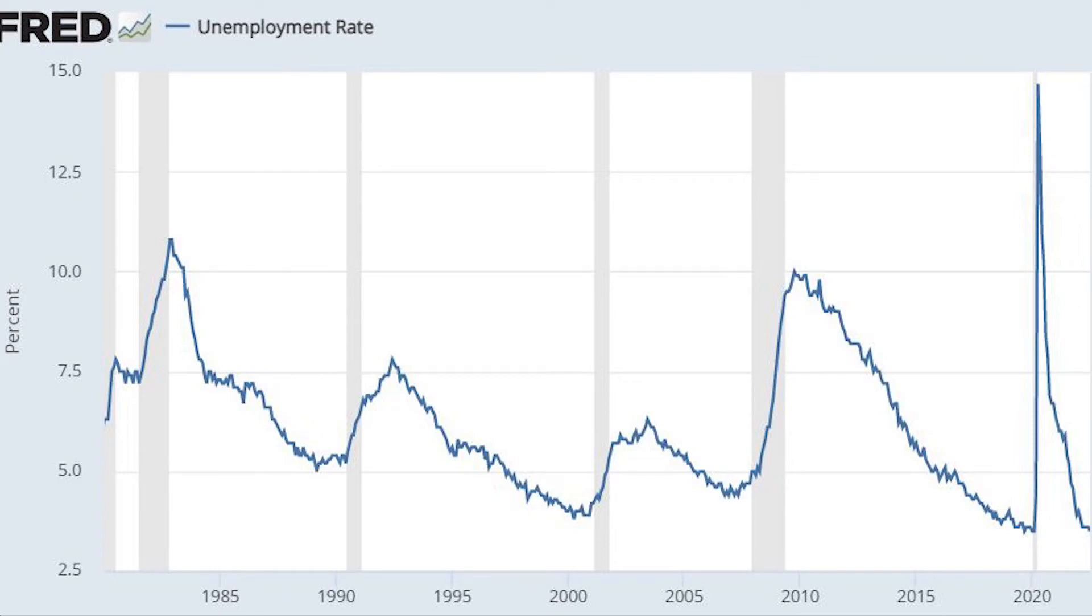And we could also look at a graph of the unemployment rates. And we see the same thing. The gray bars represent recessions. And as you notice, unemployment rises during recessions, and then it falls during the expansions. Exactly what we'd expect.